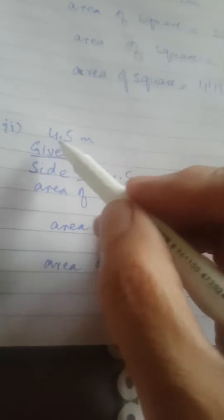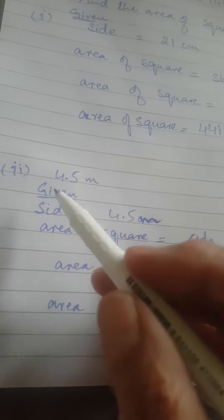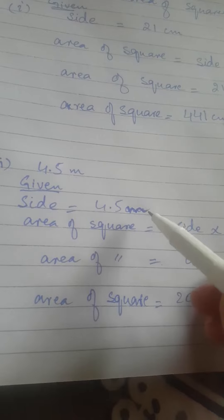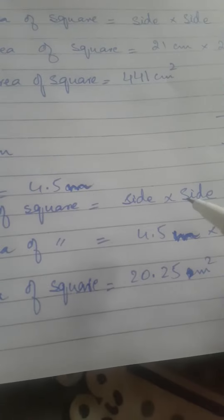This is the second part. In this part, the side is given which is 4.5 meter. So in the given, you will write down side which is 4.5 meter. Area of square is to be found out by the same formula: side into side.